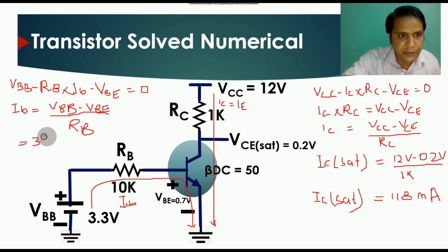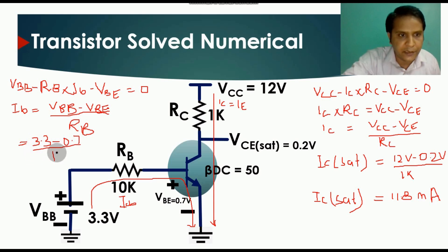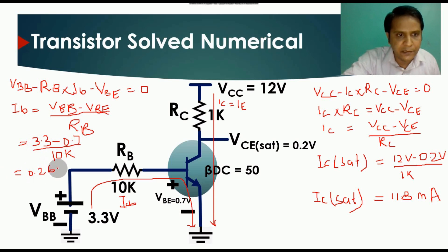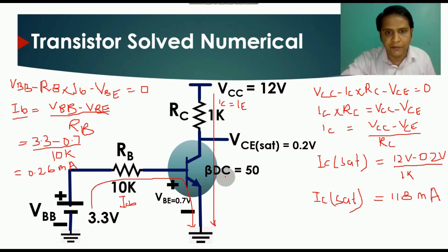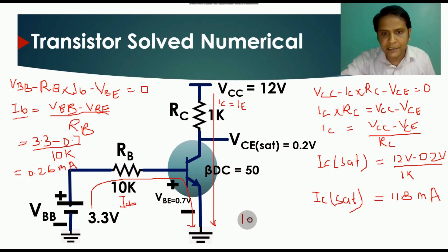Substituting values: VBB equals 3.3 volt, VBE equals 0.7 volt, RB equals 10k. Solving gives IB equals 0.26 milliampere. This is the base current flowing through this circuit.